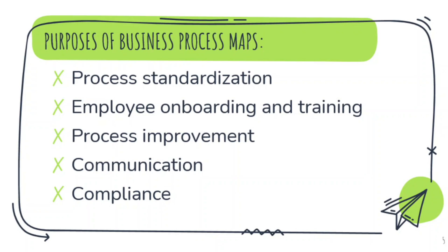We also need process maps for communication — so people aren't constantly asking questions because they already know the process to follow. And for compliance: for example, during accreditation, there is a memorandum from COA, the Commission on Audit, requiring us to create a flowchart. Quality assurance organizations also need to see process maps to check the quality of what we do. We need business process maps for compliance as well.